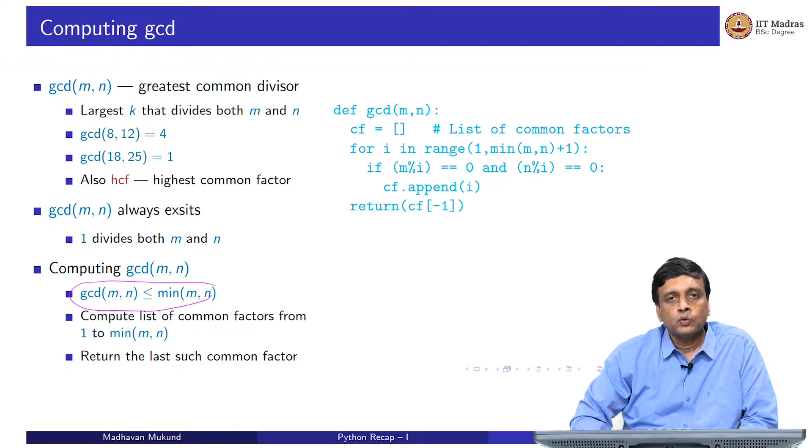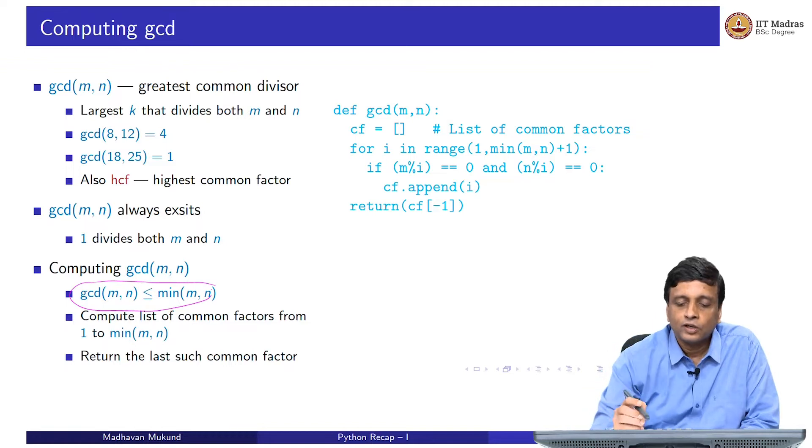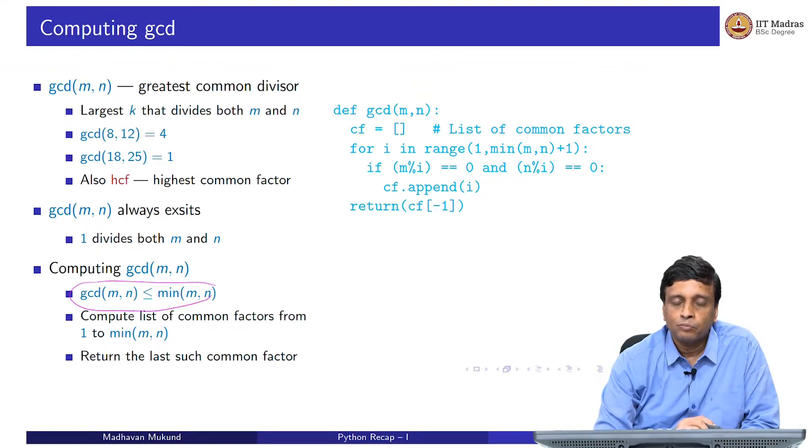The most obvious way is to run through all the numbers from 1 to the minimum of m and n, and check if a number divides both m and n. Look for all the common factors, collect these in a list, and return the last element in the list. Here is the code for that, which we will look at in a minute in more detail.